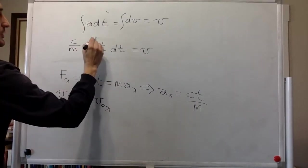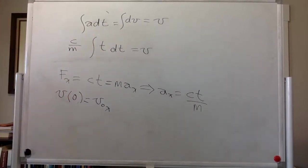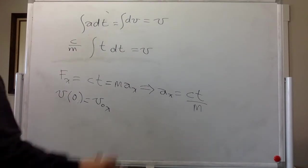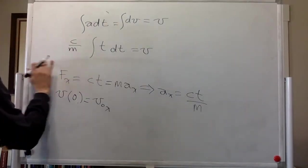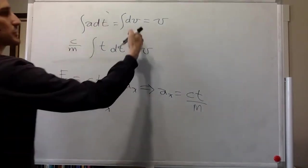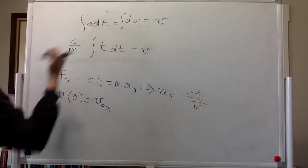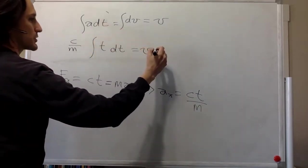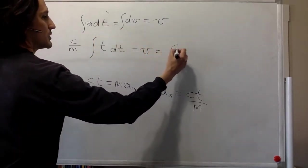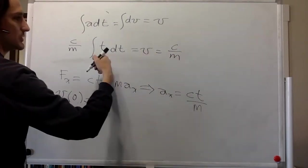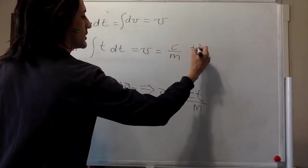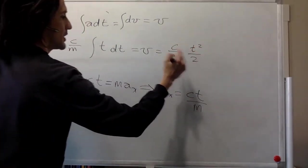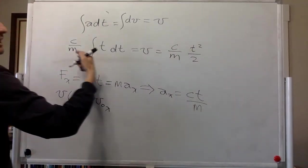And then we just have the integral of t dt, which is the simplest possible integral. Well, I guess the simplest one is the integral of the derivative. Here we have t. So this integral is going to be c over m times t squared over 2 plus a constant.